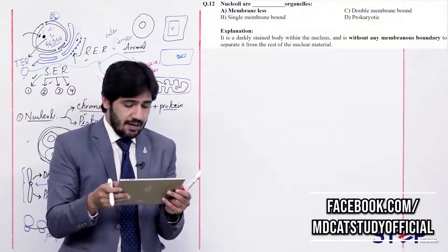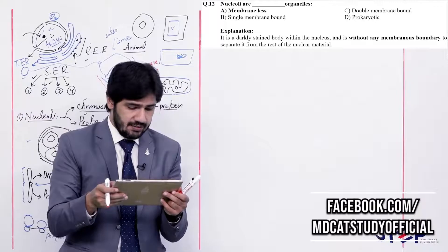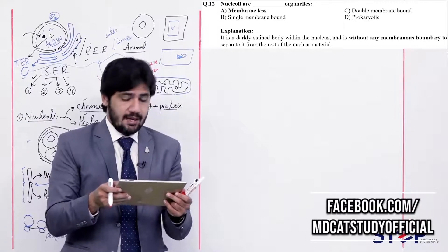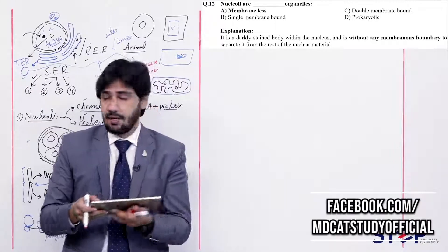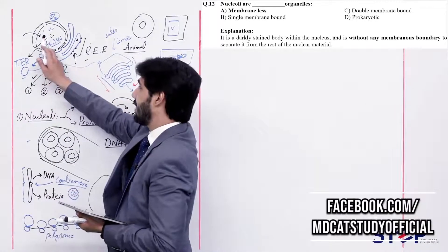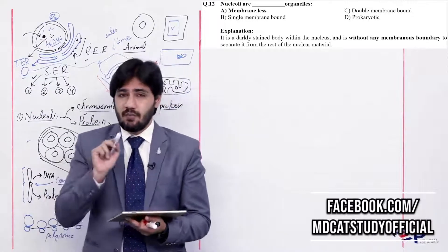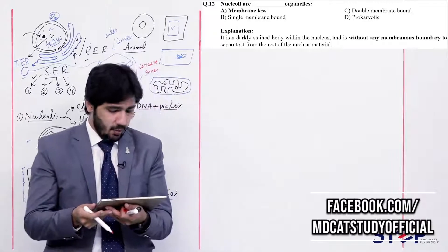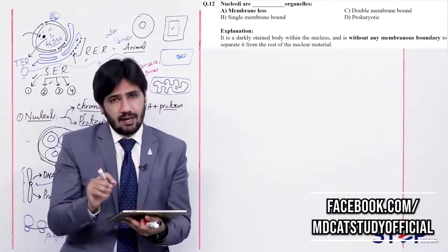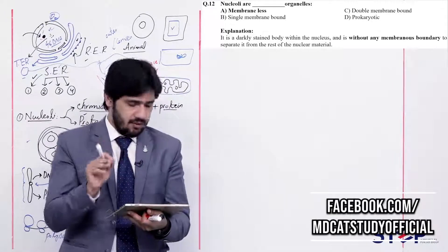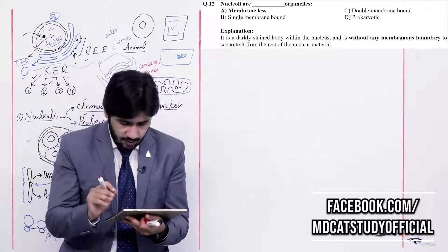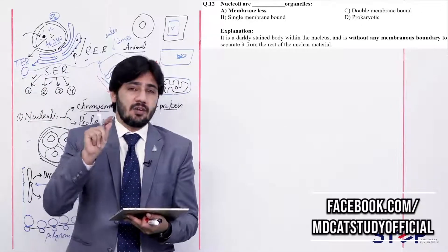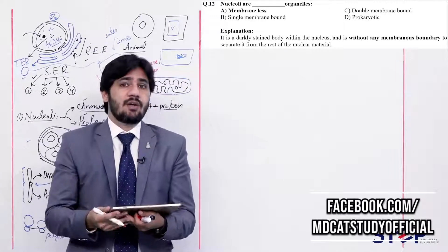Question 12: Nucleoli are blank organelles — (alpha) membrane-less, (beta) single membrane-bounded, (charlie) double membrane-bound, (delta) prokaryotic. The nucleolus is a darkly stained body within the cell with no membrane around it. So it is membrane-less. Right option is alpha. Beta and charlie are wrong since there is no membrane around the nucleolus. Delta is wrong because the nucleolus exists in eukaryotes, not prokaryotes.